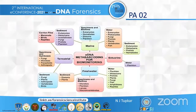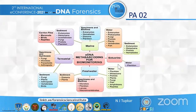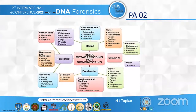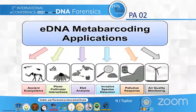The eDNA metabarcoding flowchart for biomonitoring includes examples from marine, terrestrial, freshwater, and estuarine environments. These are all examples of biodiversity, which is our main topic. We need to conserve that biodiversity with the help of environmental DNA metabarcoding.